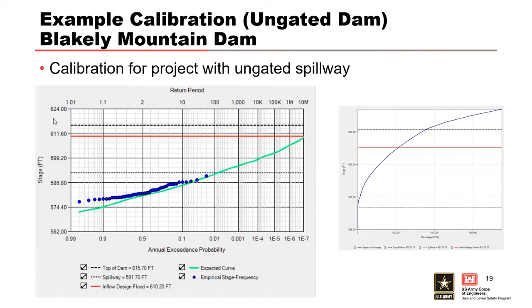The frequent annual maximum events are mostly due to regulation based on seasonal guide curves and not due to flood events. For this type of situation, calibration can sometimes be improved by evaluating the flood seasonality using annual maximum stage rather than flow. This is a situation where we might want to use stage-based seasonality instead of the inflow-based approach.